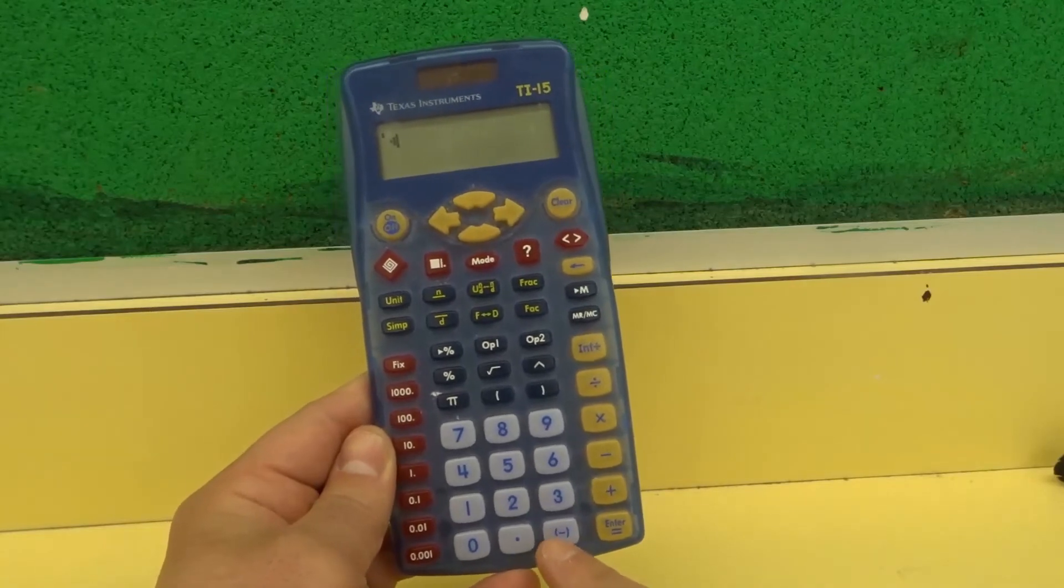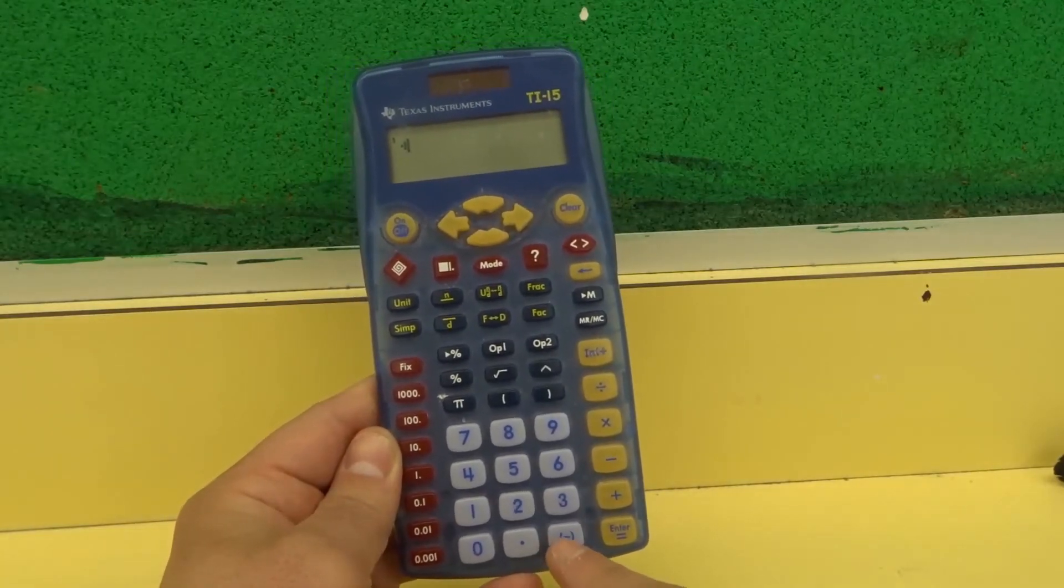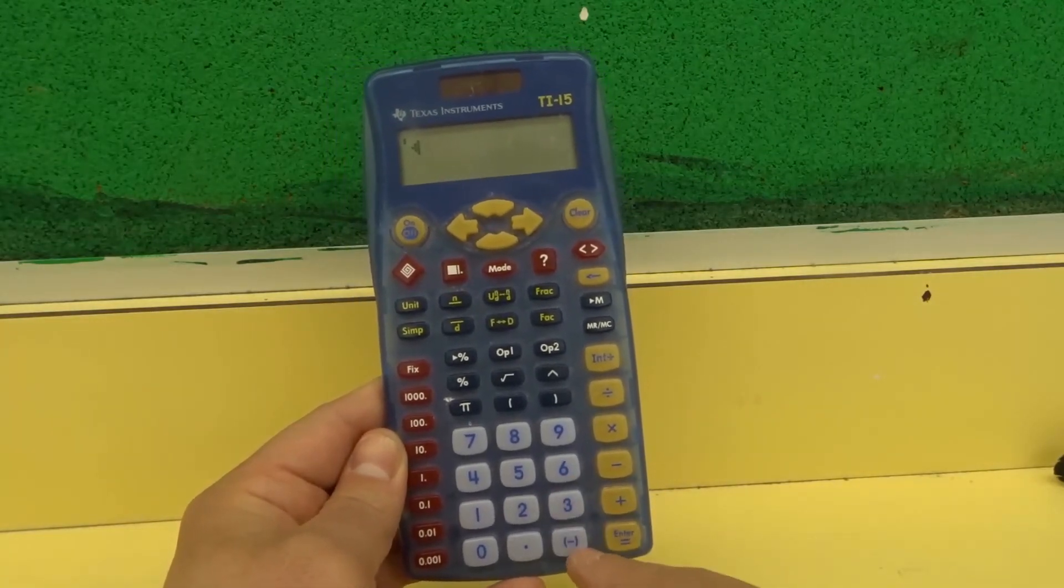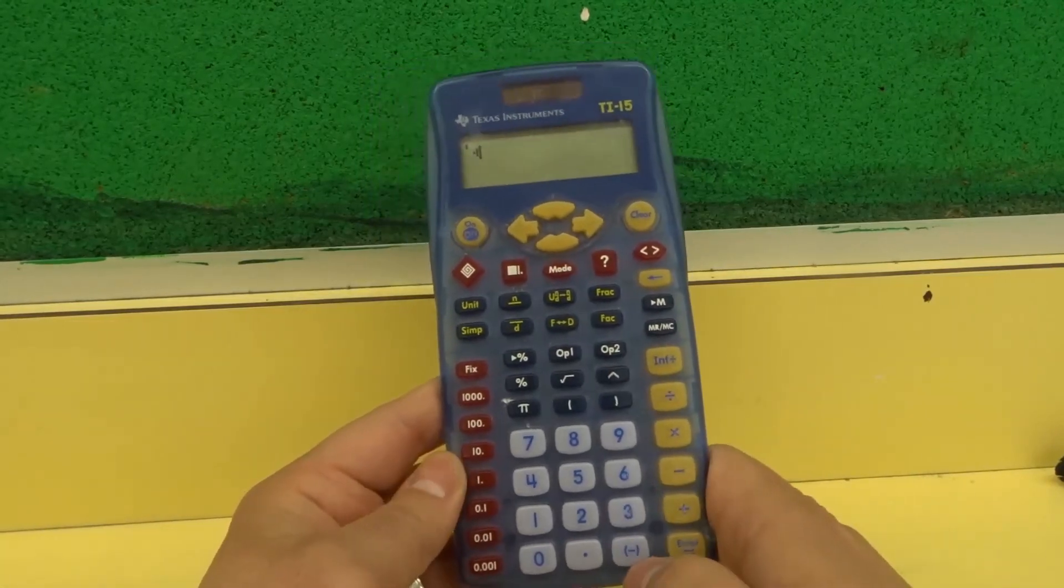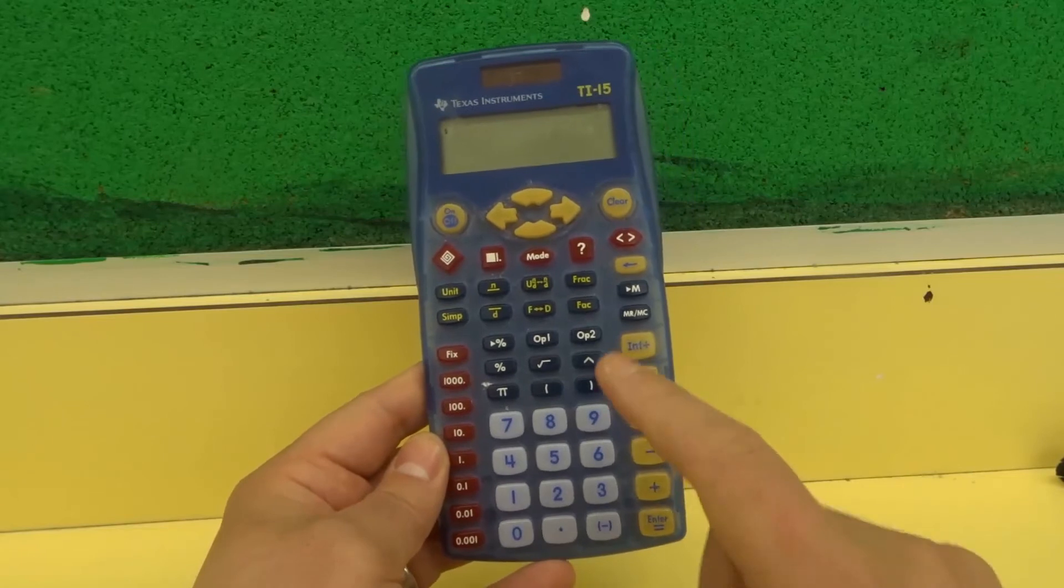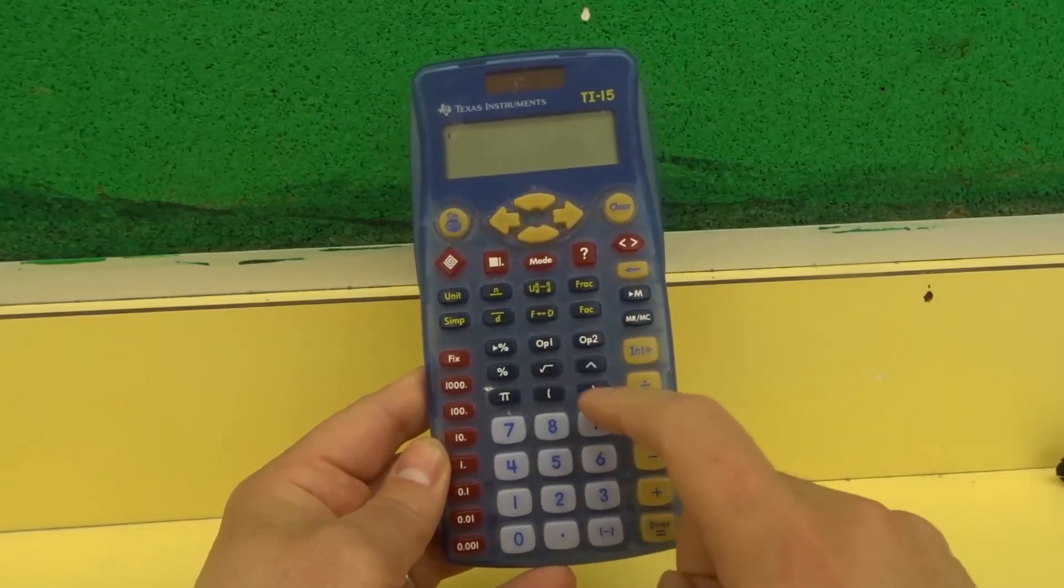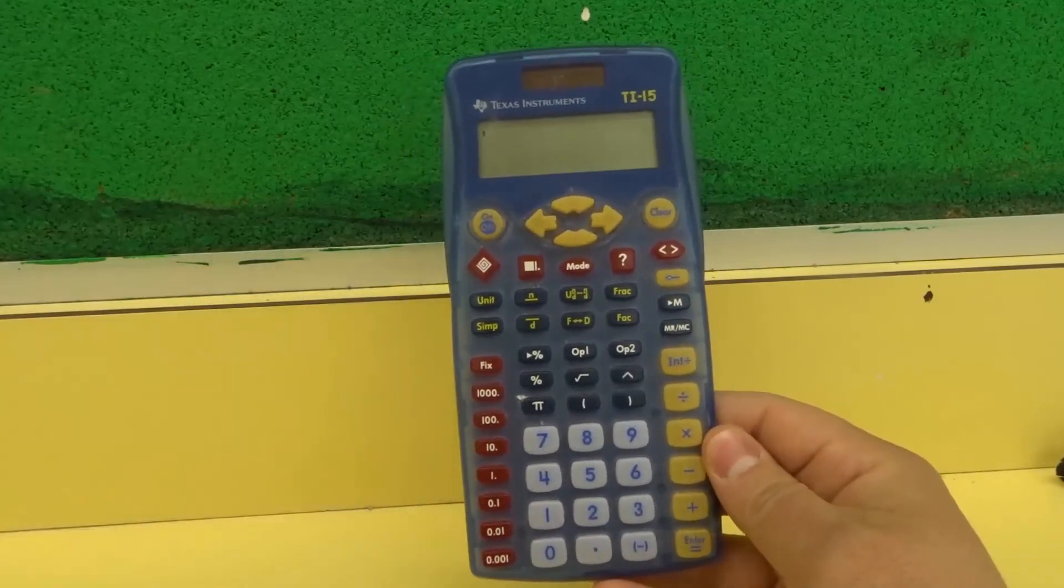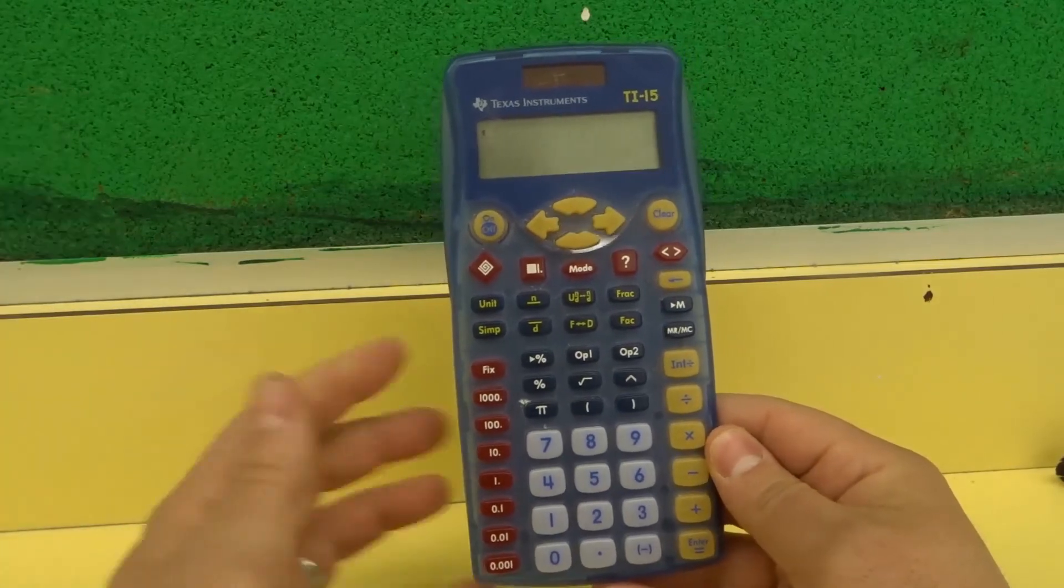In addition, you can also change the number to a negative. So I can use this button right here to change the number to a negative as well. In most calculators, it'll either show a negative or it'll show a negative in brackets, or sometimes it'll show a plus slash minus. So that means change from positive to negative and vice versa.